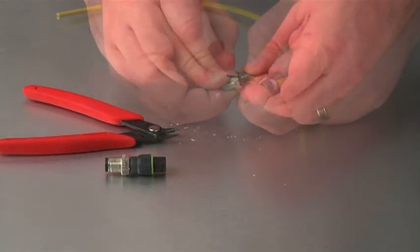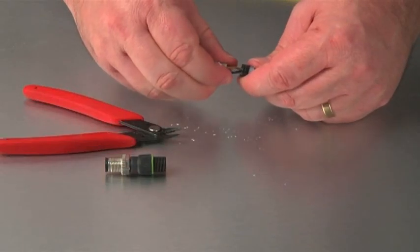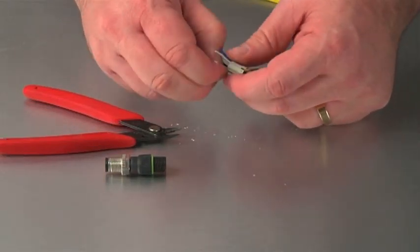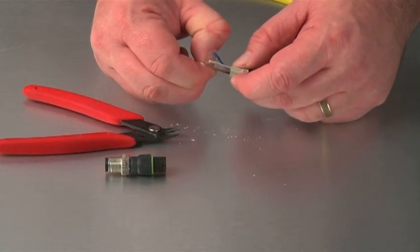Once the conductors have been fully passed through the contact carrier, slide the carrier all the way down onto the strain relief and align the positioning keys to the strain relief.